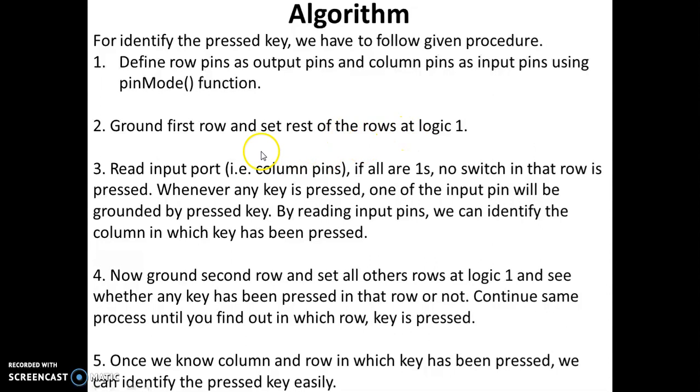Then we will read input port that is column pins. If all column pins are at logic 1, no switch in that row is pressed. Whenever any key is pressed, one of the input pins will be grounded by pressed key. By reading input pins, we can identify the column in which key has been pressed.